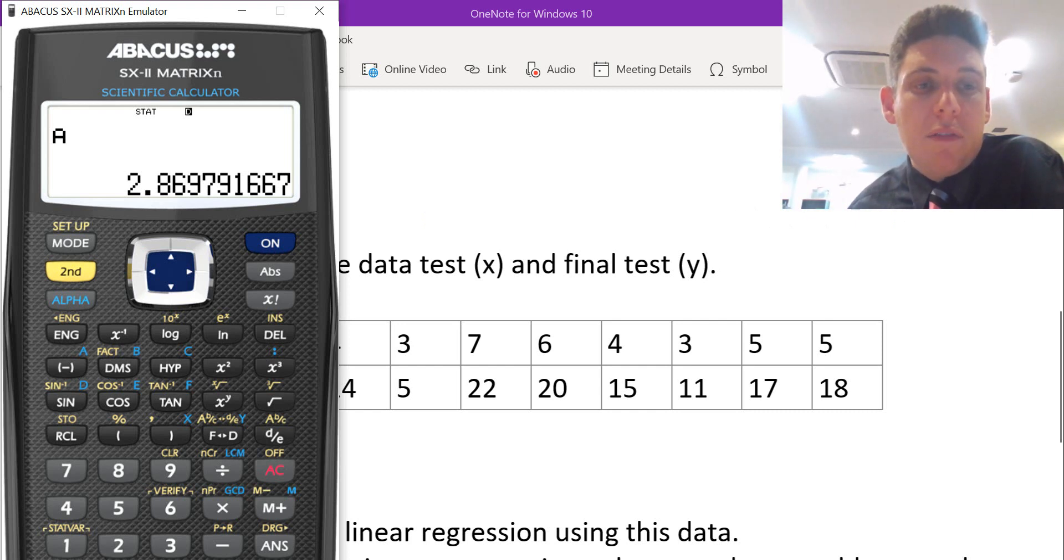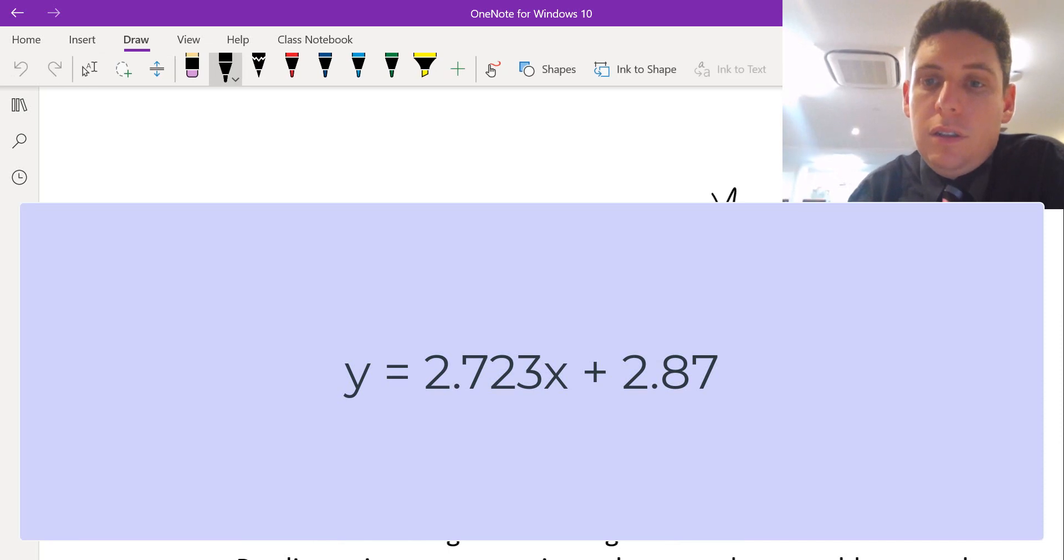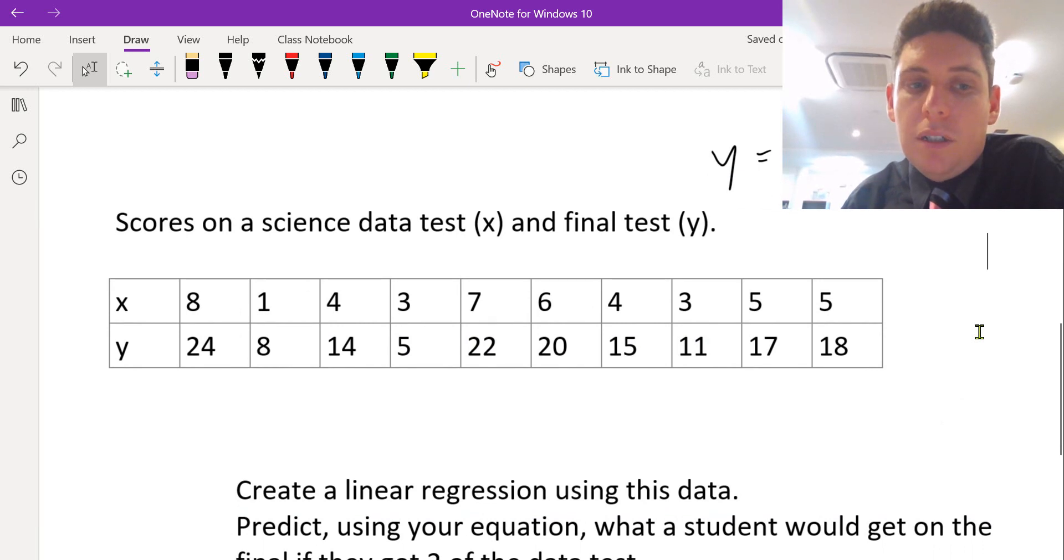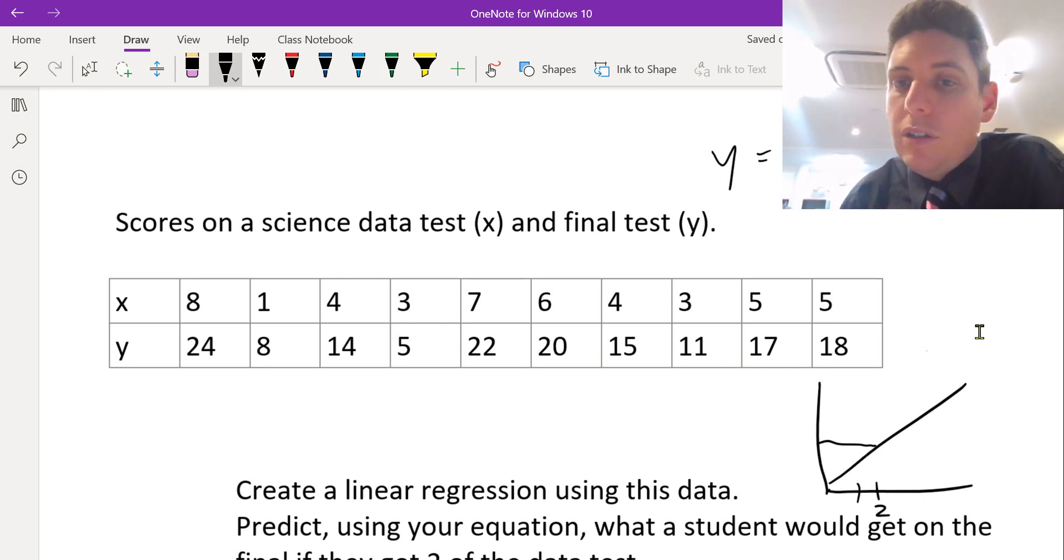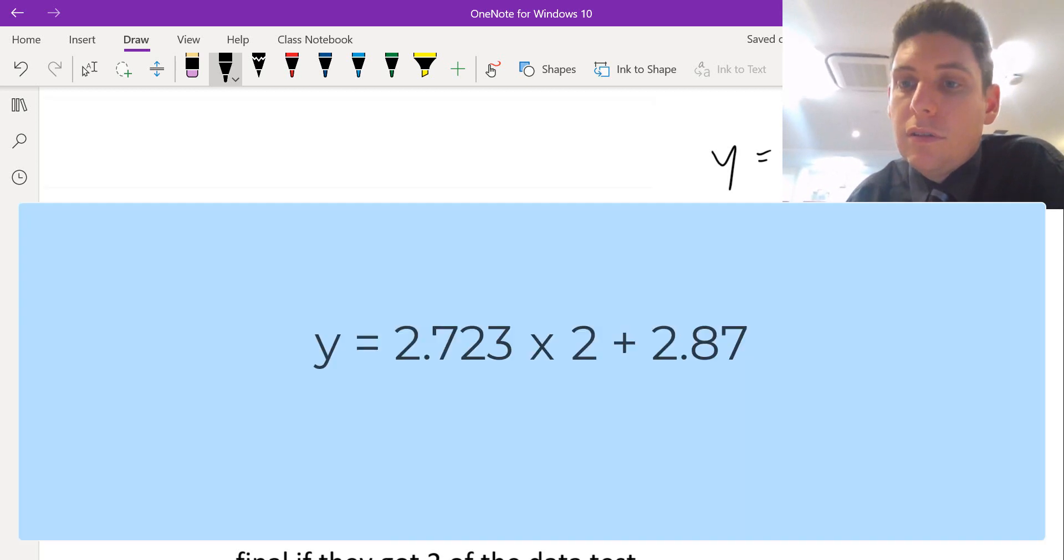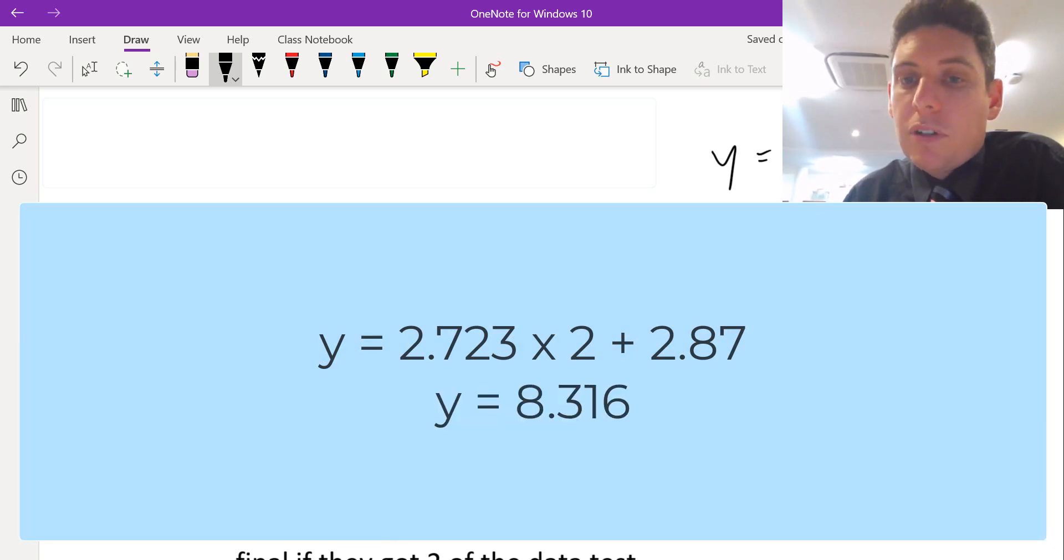And that's it. Now we have our equation. Now we can use this equation to predict a data value on the line. So if you imagine this is the equation of the line that we've just found, and we want to know, let's say, if a student got 2, what would be their y value? So you sub in 2 in there for x. So if a student got approximately 2 on their data test, they're going to get approximately 8 on their final test, using that linear regression analysis to predict that.